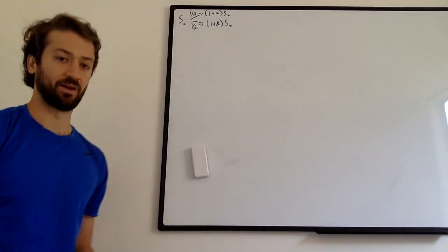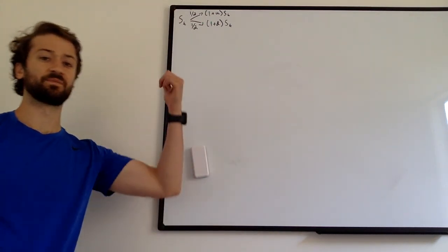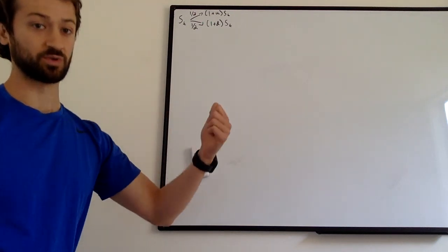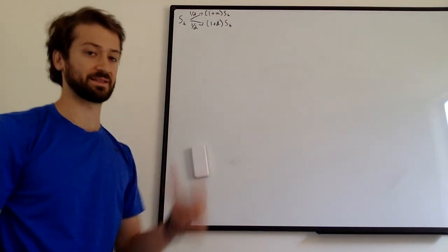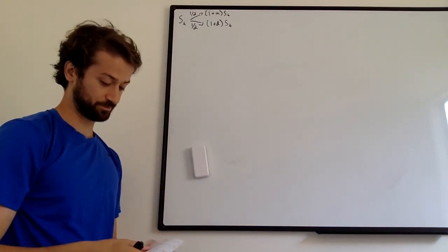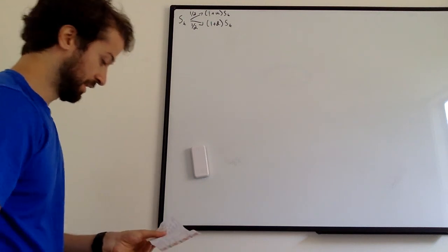In this video we're going to do something a bit simpler: we're going to assume this is a symmetric stock, so it has a one-half chance of the up move and a one-half chance of the down move. In a future video we'll do this example with the risk-neutral probability.